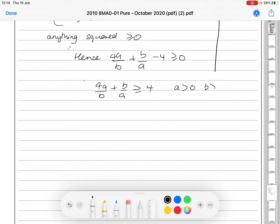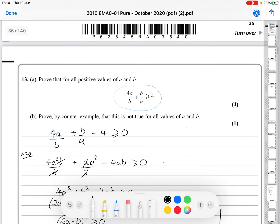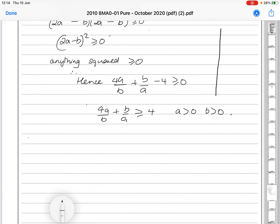And we know that a and b, a is greater than 0 and b is greater than 0. Good. And then, last one, prove by counterexample this is not true for all values of a and b because it said it was positive to start with. So, then all we've got to do is probably use a negative value.